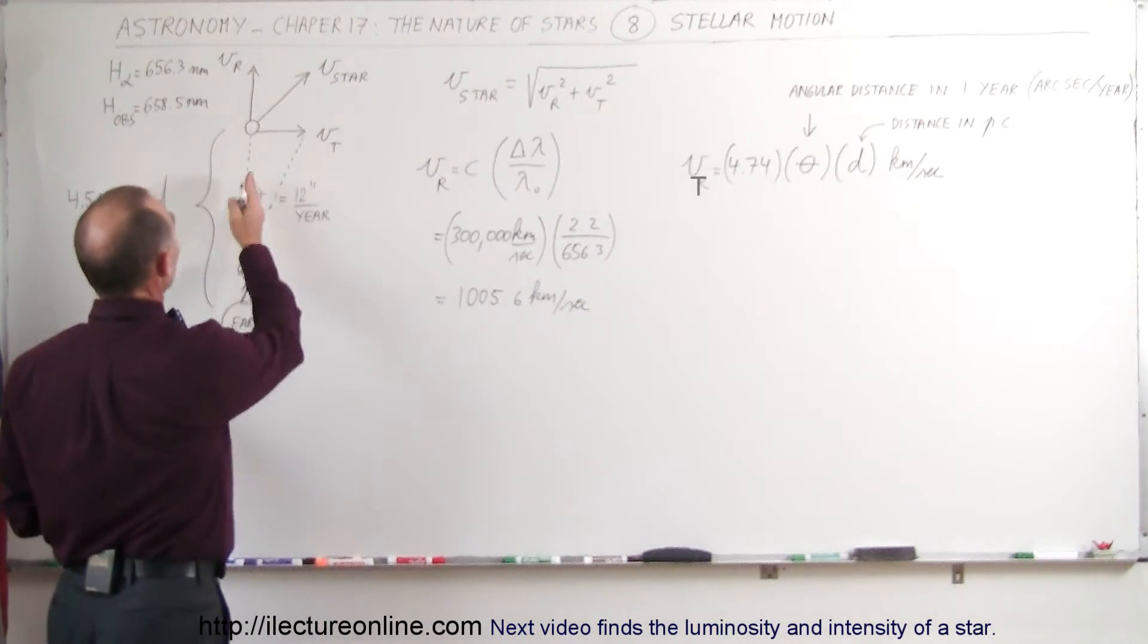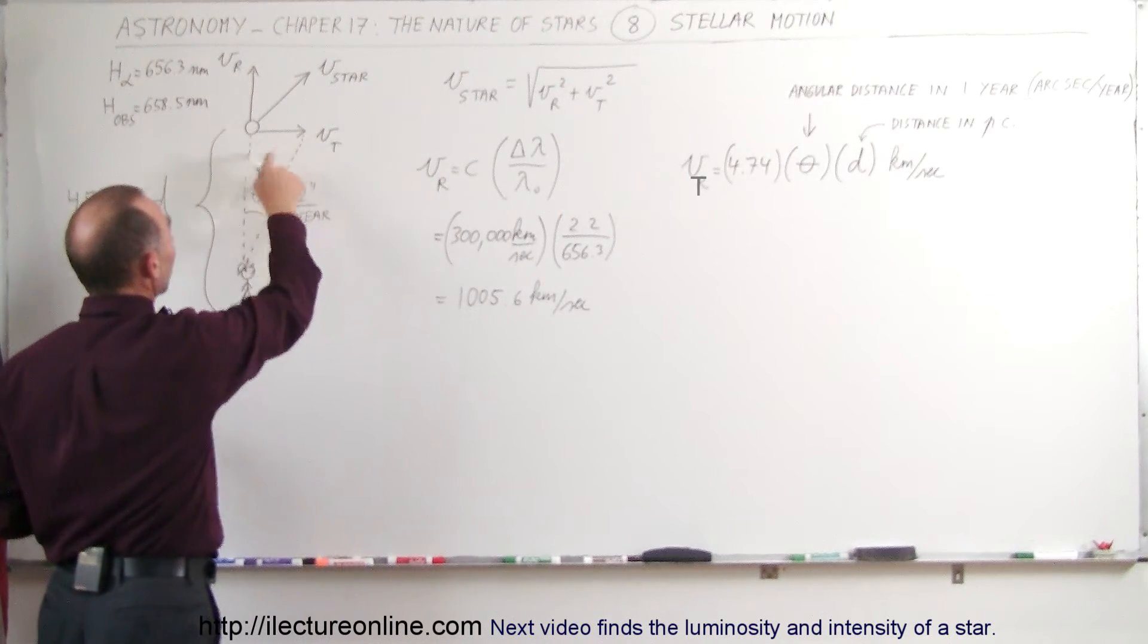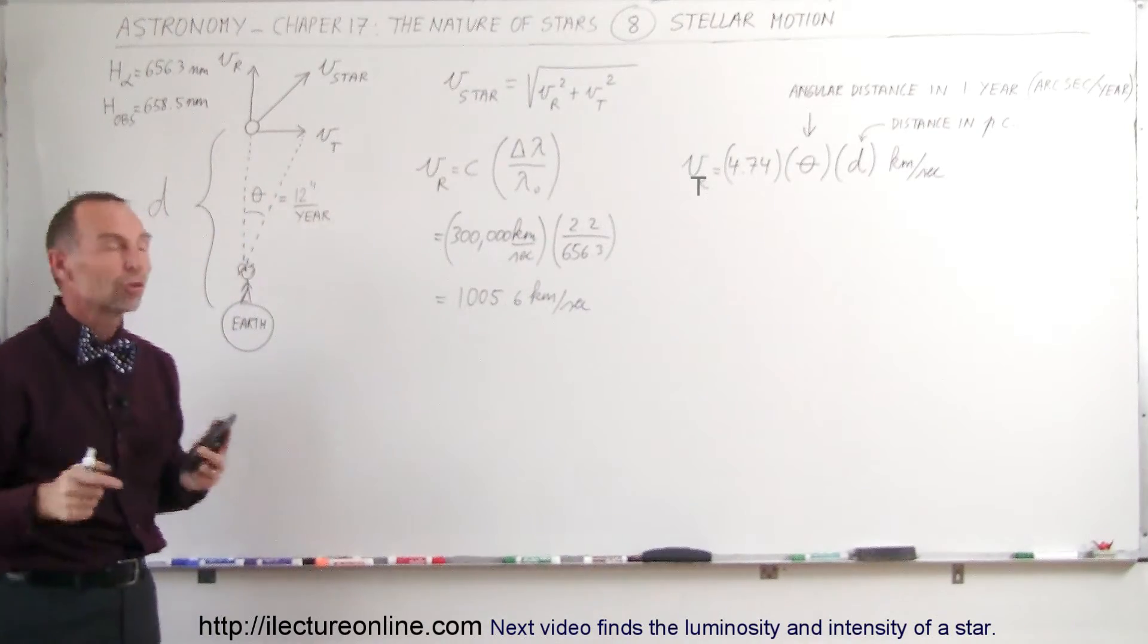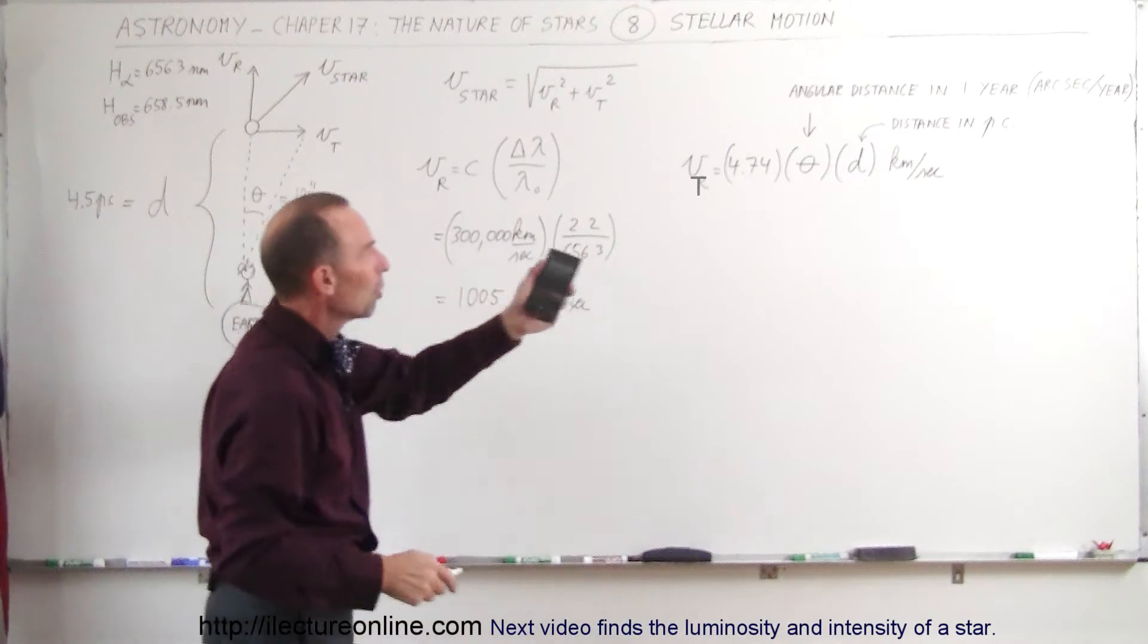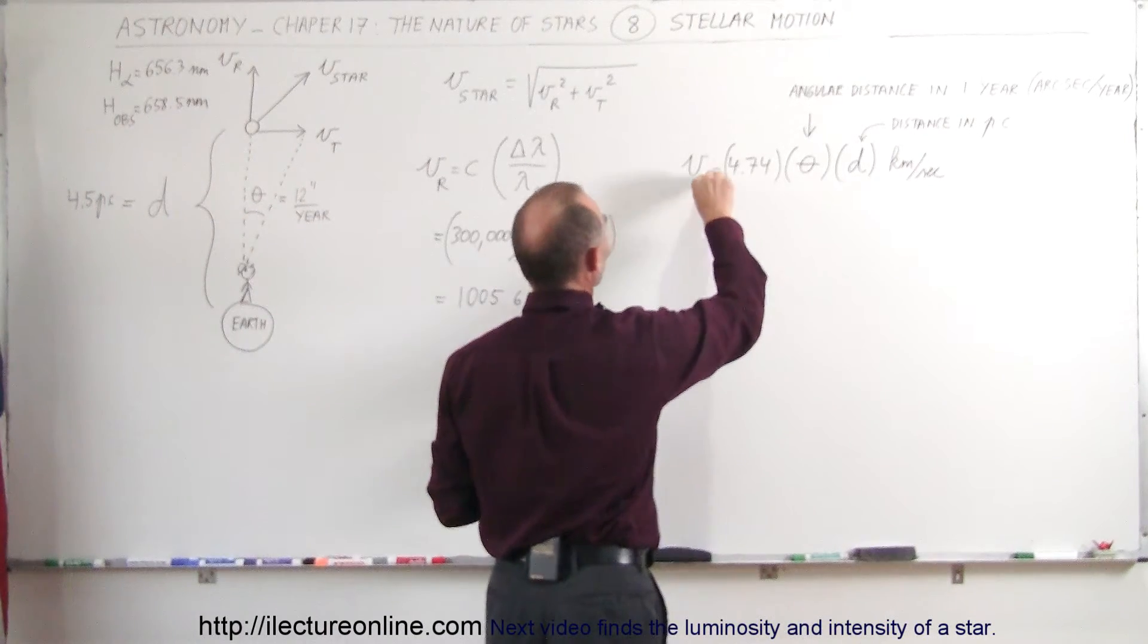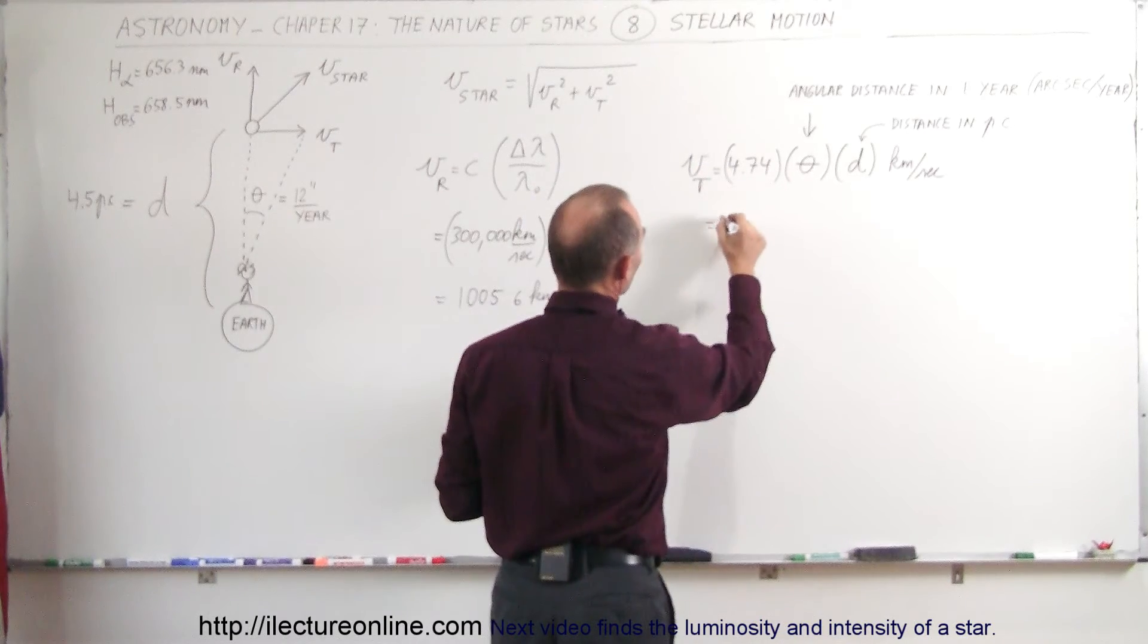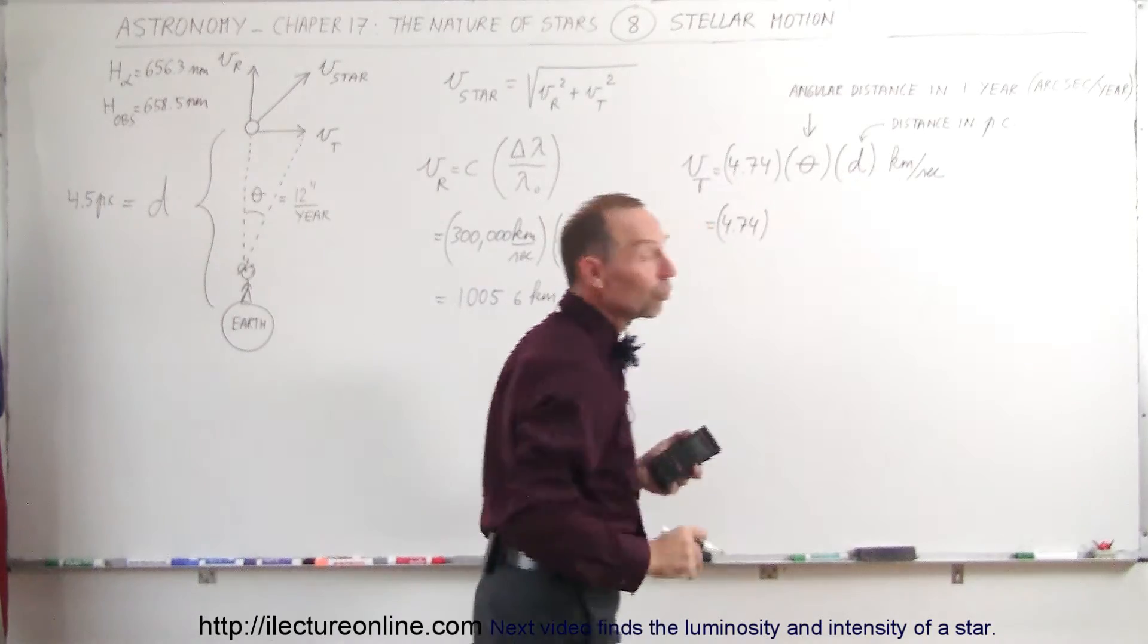Now, let's say that we observe the star and we measure where the position is, and then a year later we measure it again, and we notice that it shifted to the right 12 arc seconds during that year. The way we can then find the tangential velocity is to come over here. Okay, this should be tangential, not radial. It is equal to the constant 4.74, and that constant is what we need to be able to use the units the way we do, times the angular distance traveled in a year.